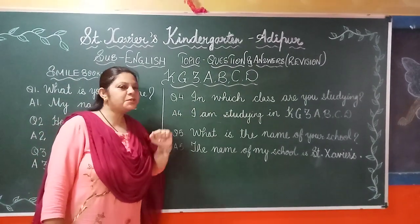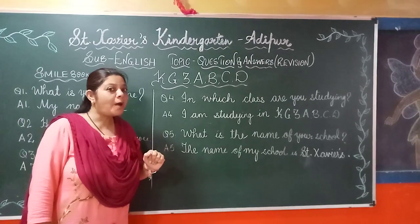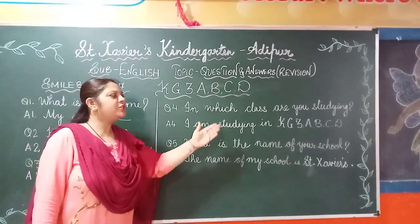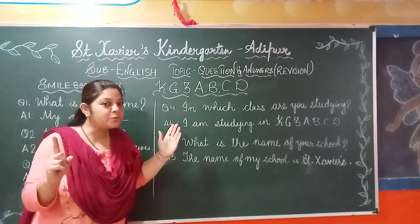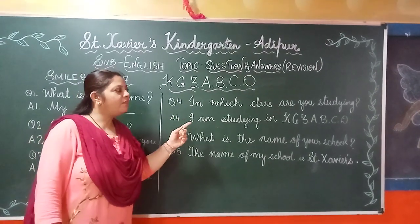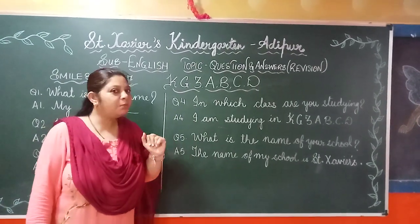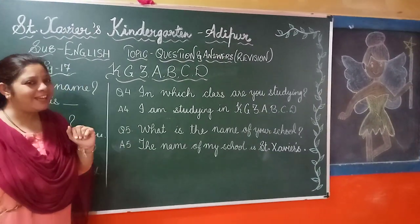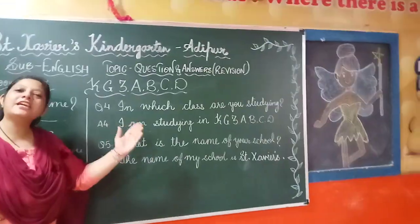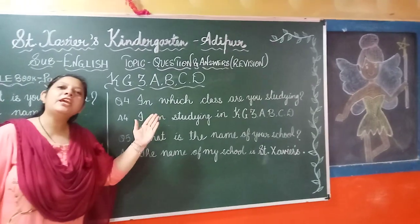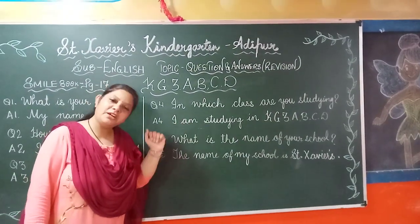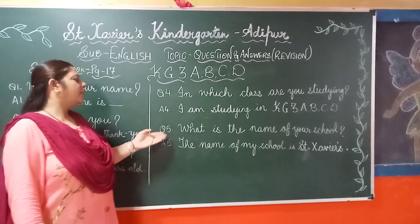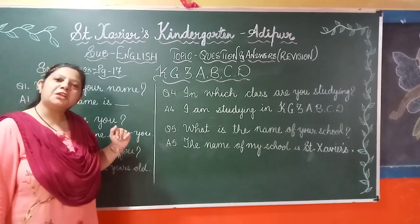Now comes question number four: In which class are you studying? Aap kaunsi class mein padhte hain? I am studying in KG3. A waale students A bolenge, B waale students B bolenge, C waale C and D waale D. So I am studying in KG3 — A, B, C, or D — aap jis class mein hain, woh bolna hai.